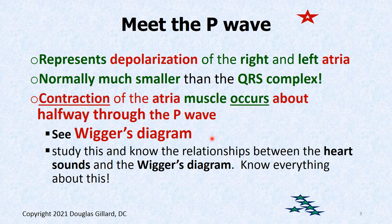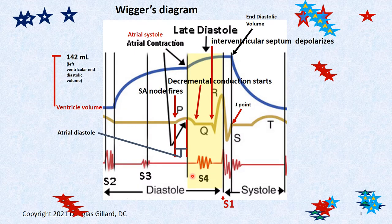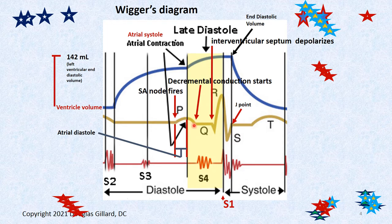The Wiggers Diagram — this is Dr. Doe's territory, but I'm free to ask a question or two about this, so make sure you know the Wiggers Diagram. This shows one heartbeat on EKG. There's the P wave, the QRS complex, and the T wave. We've already talked about that.